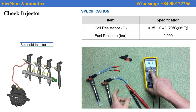I use a multimeter and check the resistance of the injector. You can see the coil resistance. This is a certain specified value.